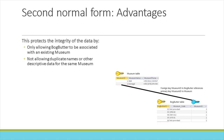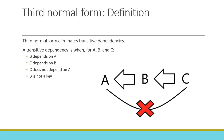Third normal form is where it starts to sound a little complicated, but it's really not. Third normal form eliminates transitive dependencies. A transitive dependency is when, for some A, B, and C: B depends on A, C depends on B, but C does not depend on A, and B is not a key.